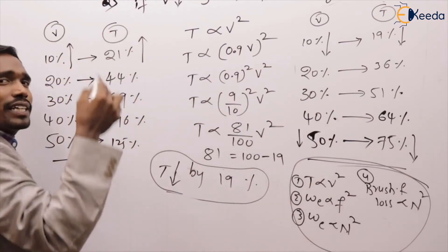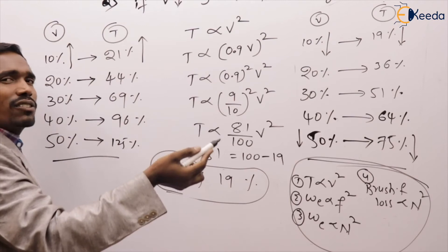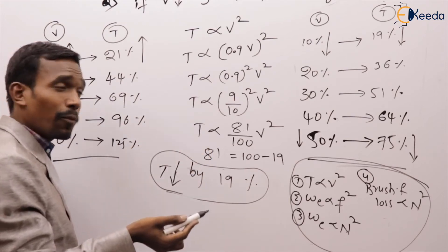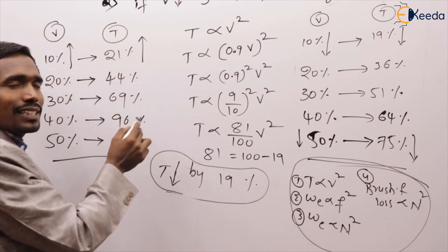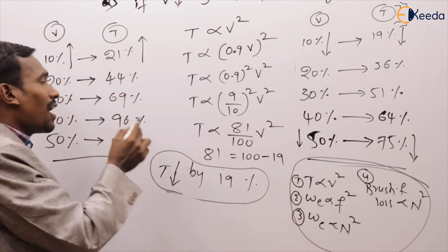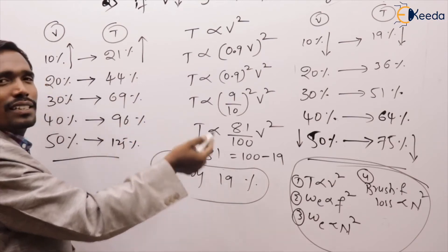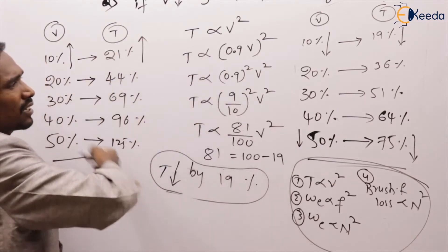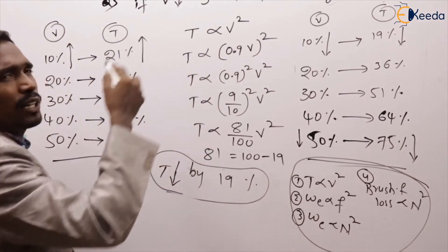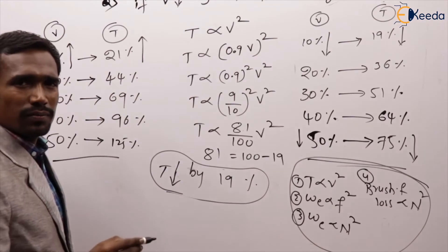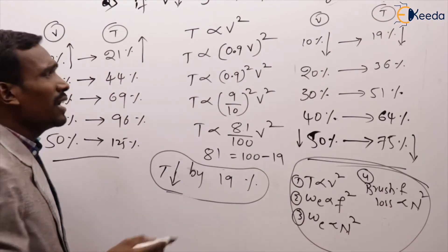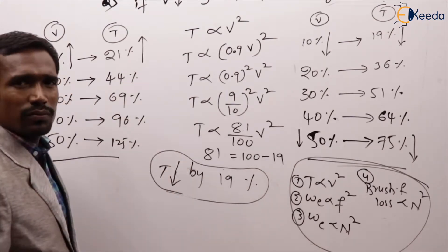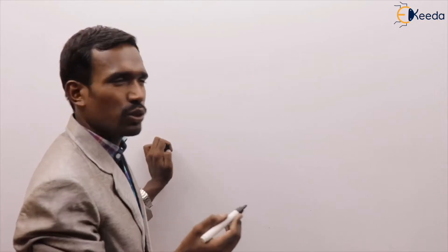14 squared = 196, which is 100 plus 96. These are the problems they are asking regularly. This is the question on torque equations, and they are asking questions like this.